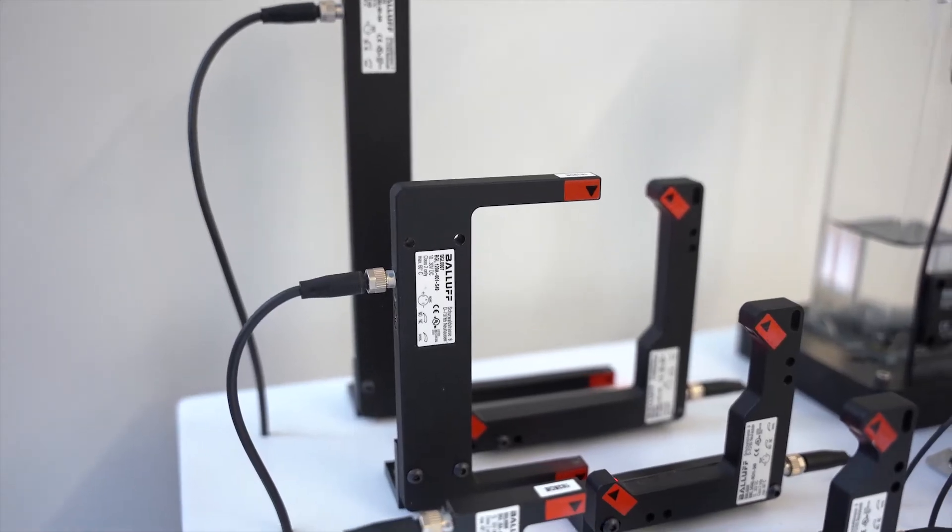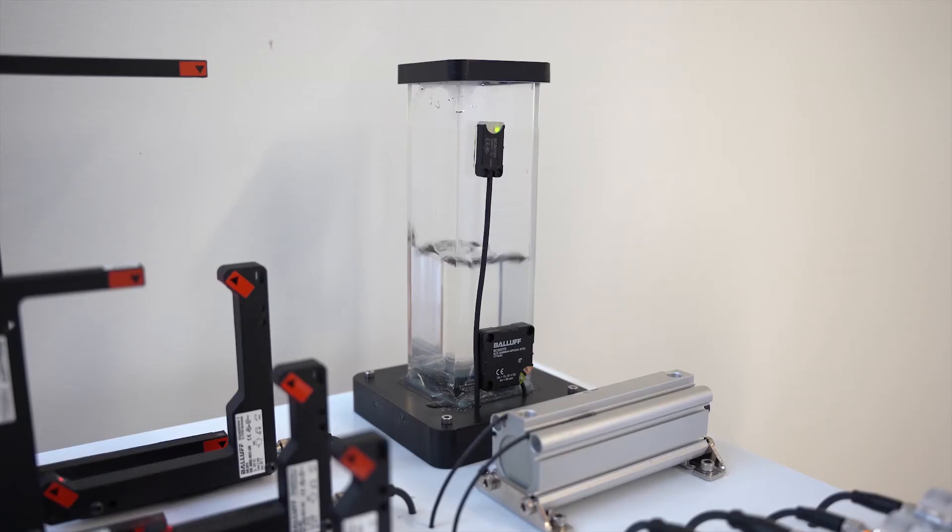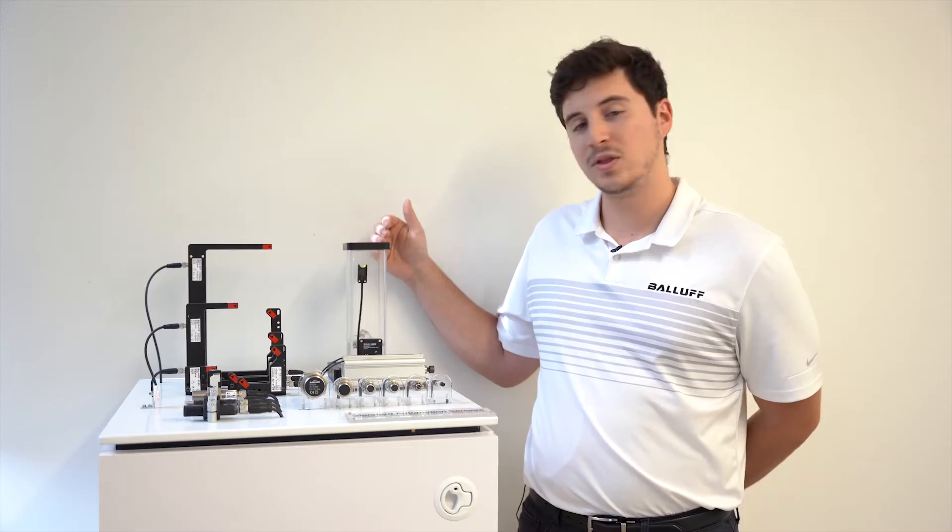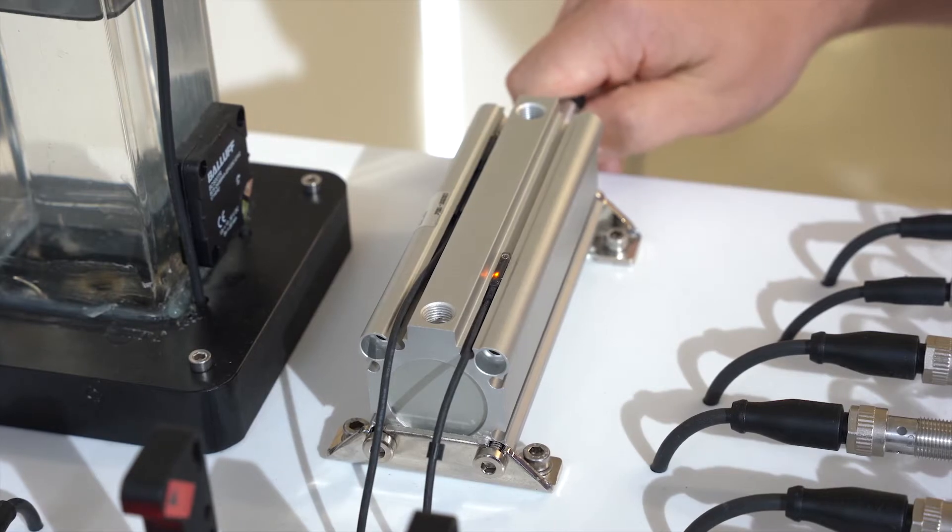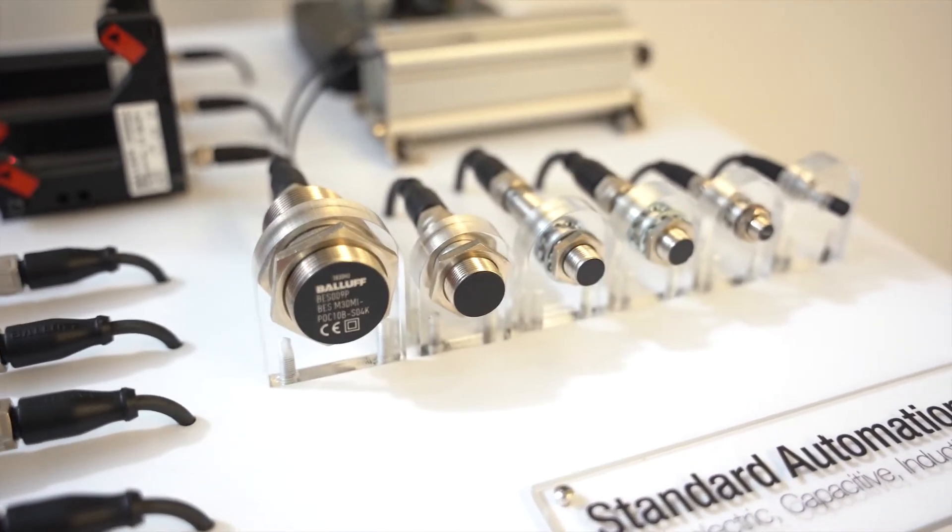Today's countertop shows four different portfolios of sensors. The first being photoelectric sensors located on the left, the second is capacitive sensors located on the back right, the third is magnetic field sensors located on the pneumatic cylinder, and the fourth is inductive proximity sensors located on the front right.